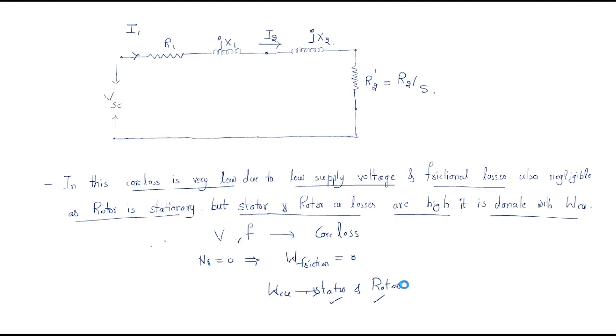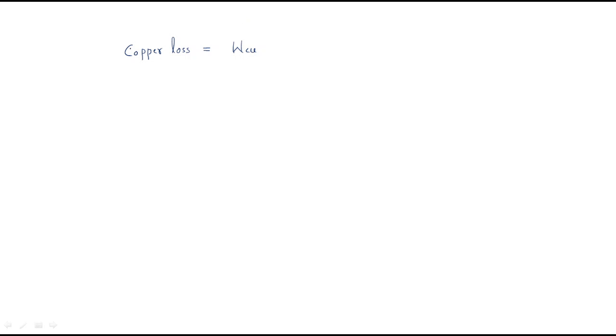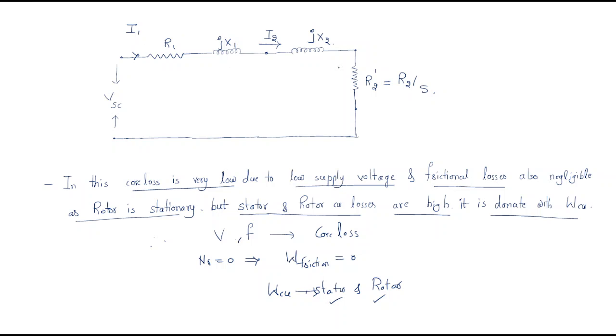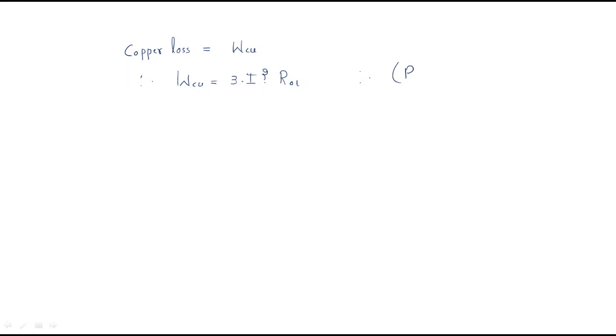Let us denote copper loss as Wcu. The copper loss equals 3 × ISC² × R01, where R01 is the total resistance referred to stator: R01 = R1 + R2 dash / s. From this, we can find R01 = Wcu / (3 × ISC²).